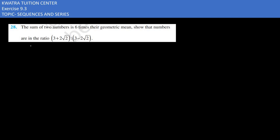Let's start with the 28th question. It says that the sum of two numbers is six times their geometric mean. Show that the numbers are in the ratio (3+2√2):(3-2√2).